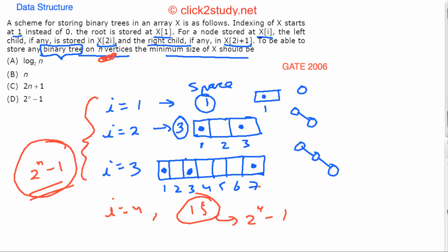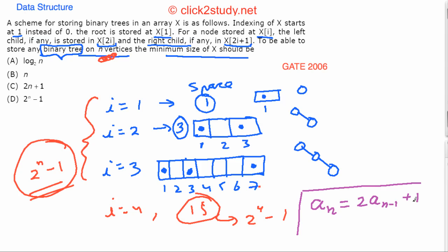You can also derive this via a recurrence relation. The space needed for n nodes equals 2 times the space needed for n−1 nodes, plus 1. Repeatedly substituting gives a geometric progression, which resolves to 2^n − 1. Either way — direct pattern recognition or recurrence — the answer is 2^n − 1.